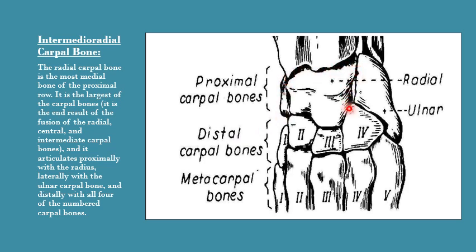The radial carpal, present at the medial aspect of the forelimb, is the largest carpal bone of dog. It is formed due to the fusion of the radial carpal bone with the intermediate carpal bone, so it can also be called the intermediate radial carpal bone. Proximally it articulates with the radius; distally with the first, second, third, and fourth carpals; laterally with the ulnar carpal; and medially it has no articulation, as it is at the medial-most aspect.